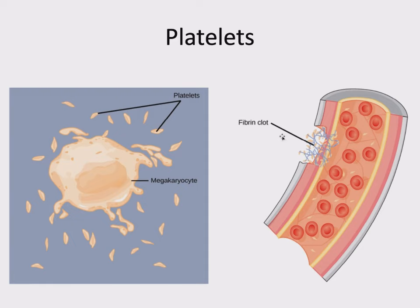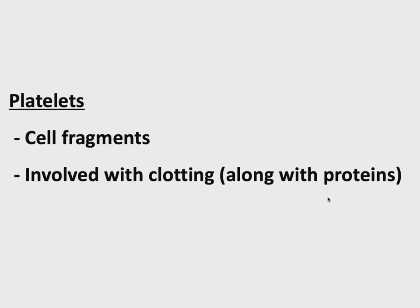If you have a wound or something that breaks the wall of a capillary, your blood is going to start leaking out to the surrounding tissue. So if you have a hole, the first thing you want to do is patch that hole to prevent leaking. Platelets, along with fibrin and a couple of other proteins present in plasma but not serum, are going to form a clot and plug up the hole. So platelets are cell fragments involved in clotting along with proteins.